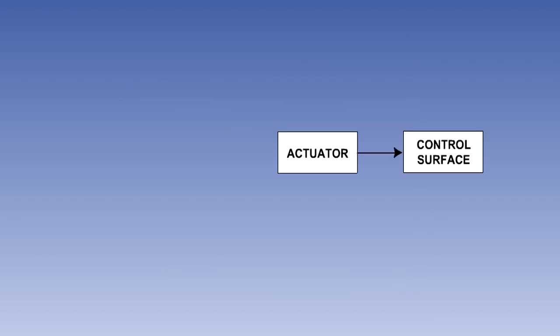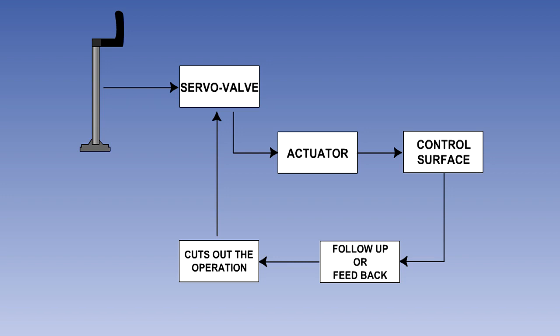A simple power-operated flying control system consists of four essential parts. They are: a hydraulic actuator to move the control surface, a servo or control valve to control the actuator, a follow-up or feedback system to ensure that the actuator movement stops when the required displacement is achieved,